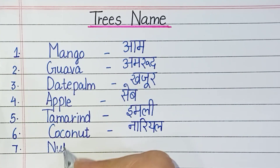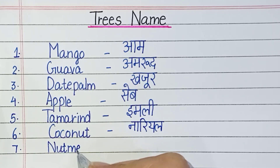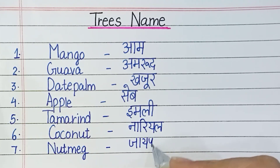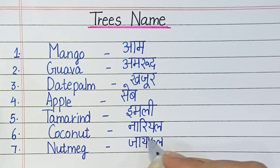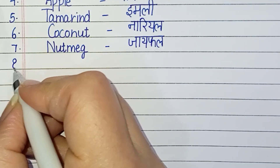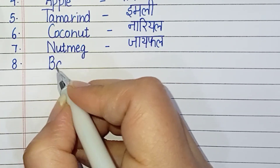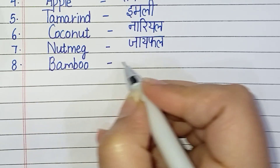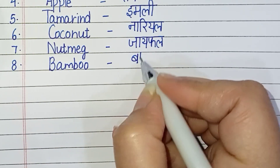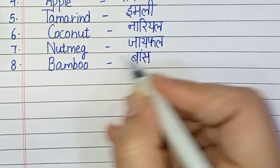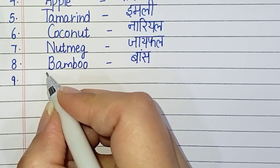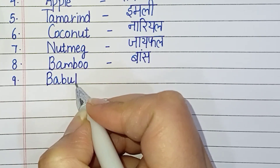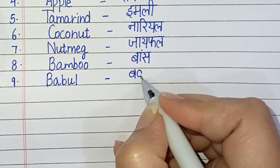Number seven: N-U-T-M-E-G, nutmeg, means jaifal. Number eight: B-A-M-B-O-O, bamboo, means baans. Number nine: B-A-B-U-L, babool, means babool.